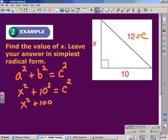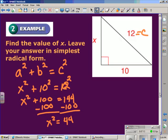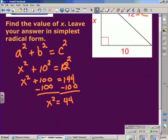So that would give us x squared plus 100 is equal to 144. Subtract 100 from each side to give us x squared is equal to 44. And we solve that equation by taking the square root of each side to give us x is equal to the square root of 44.